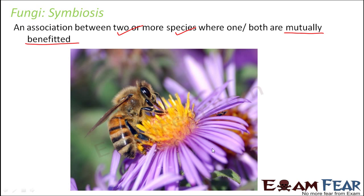For example, here on the screen you can see a bee and a flower. There is a symbiotic relationship between the bee and the flower. The bee is obtaining its food from the flower — it is obtaining the pollen from the flower. So that is how the bee is getting benefited. What about the flower? The flower is getting pollinated by this bee.